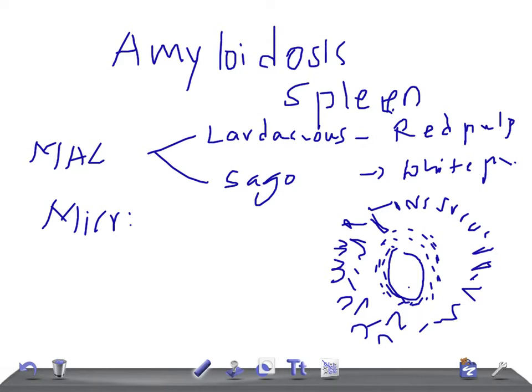On microscopic examination, in lardaceous spleen the amyloid deposits are seen in the walls of splenic sinuses and in the region of the red pulp — deposited along the walls of the splenic sinuses and the red pulp. Whereas in sago spleen, the amyloid deposits begin in the wall of arterioles of the white pulp and eventually replace the splenic follicles — it starts with the arterioles of the white pulp.